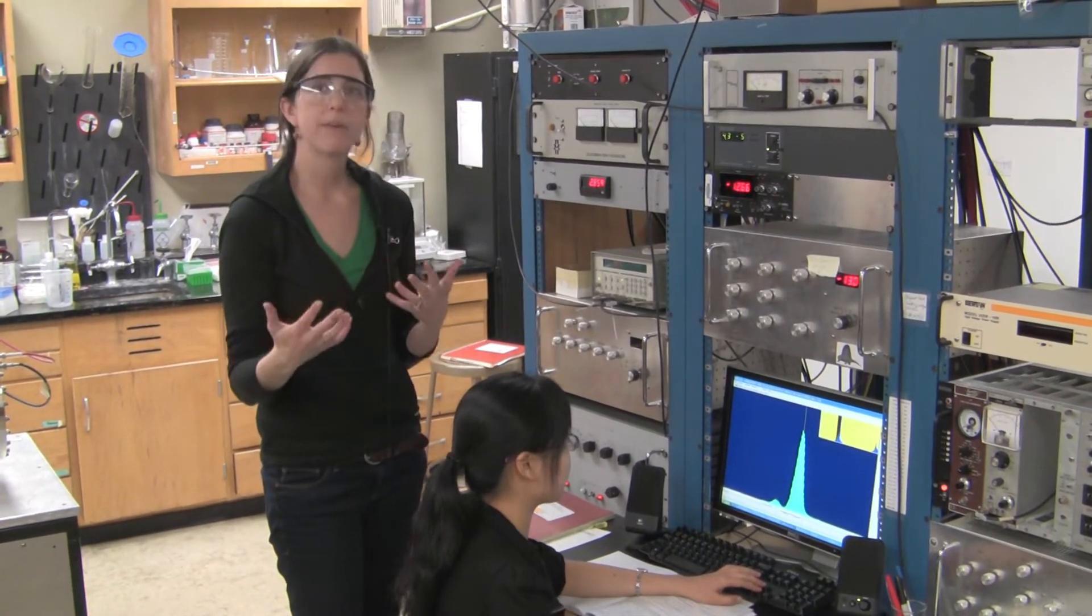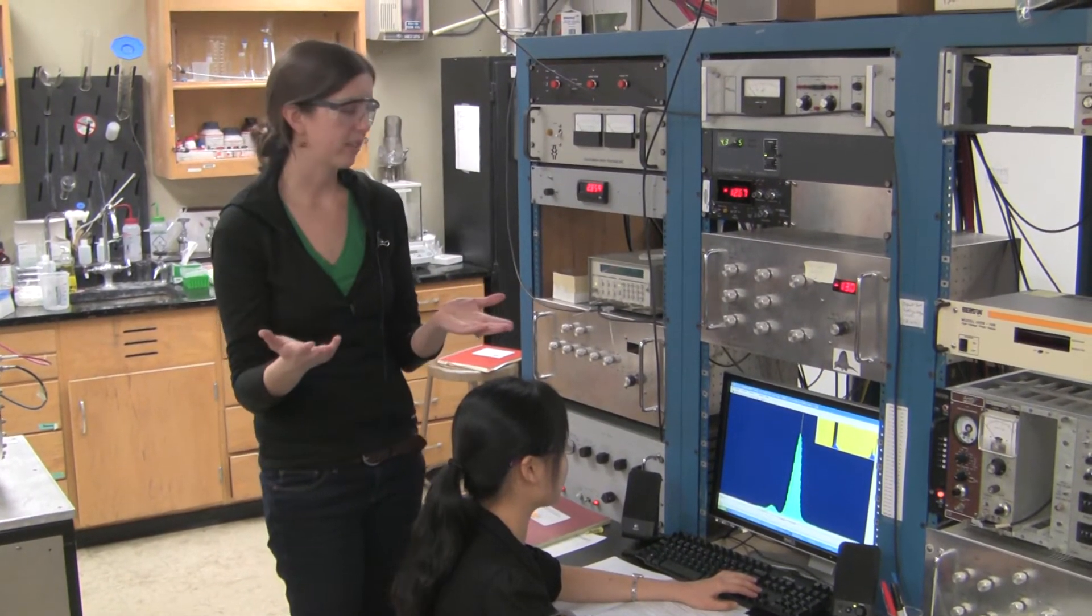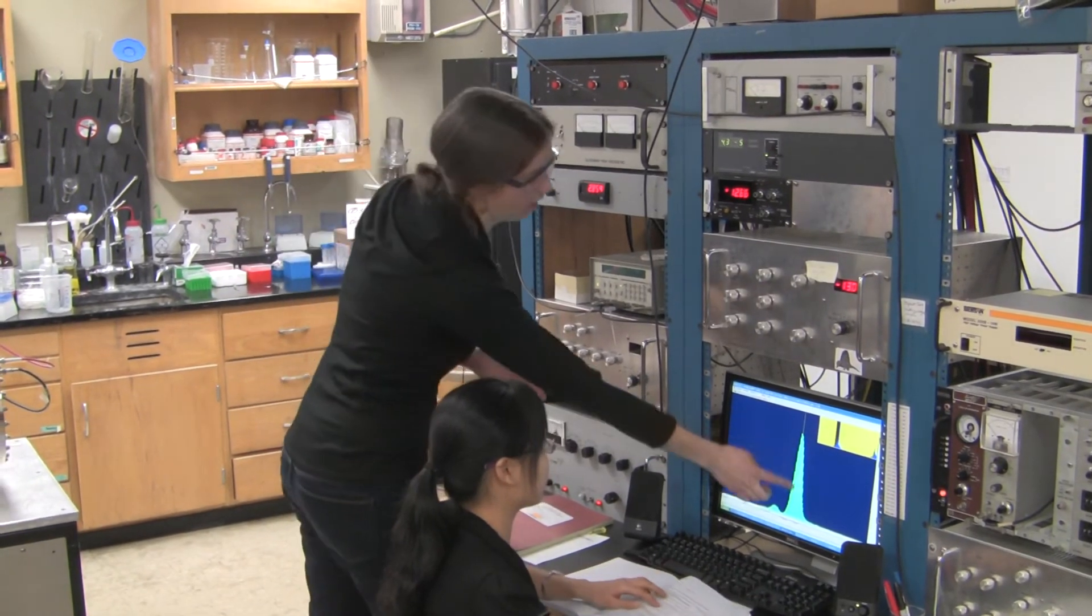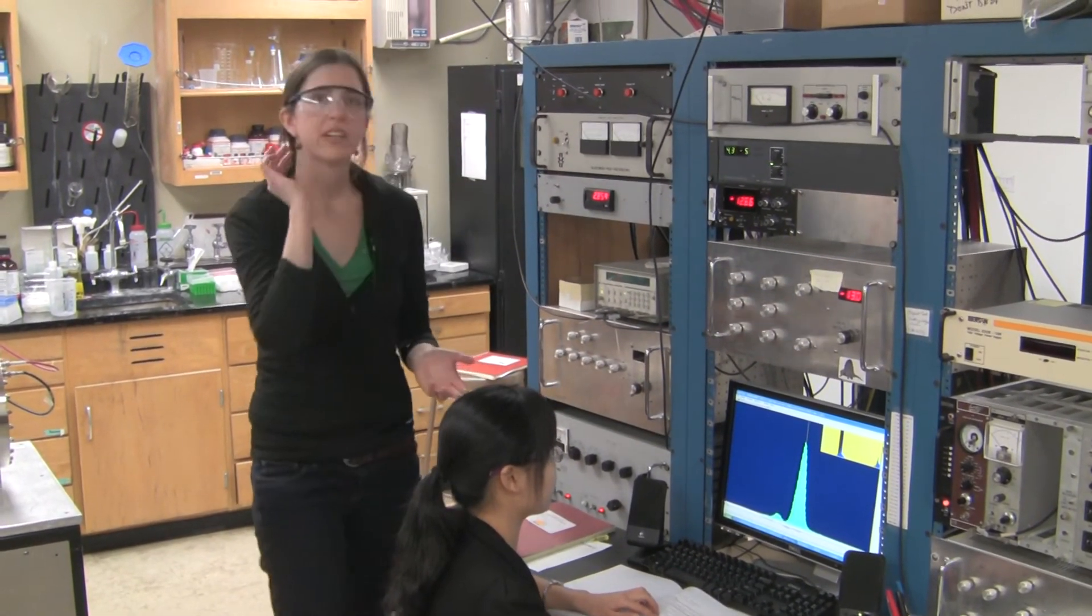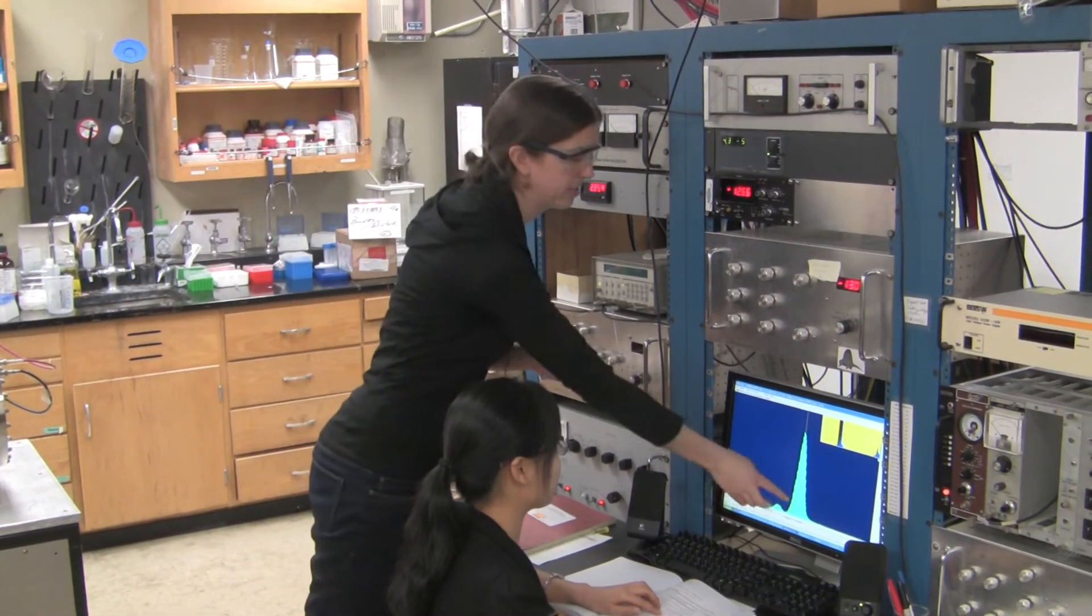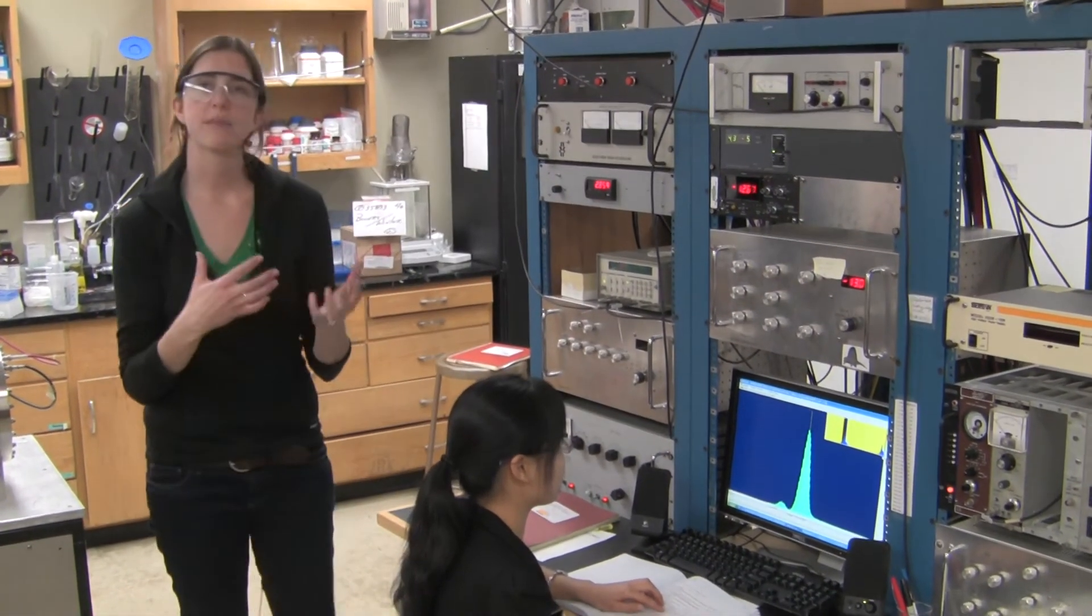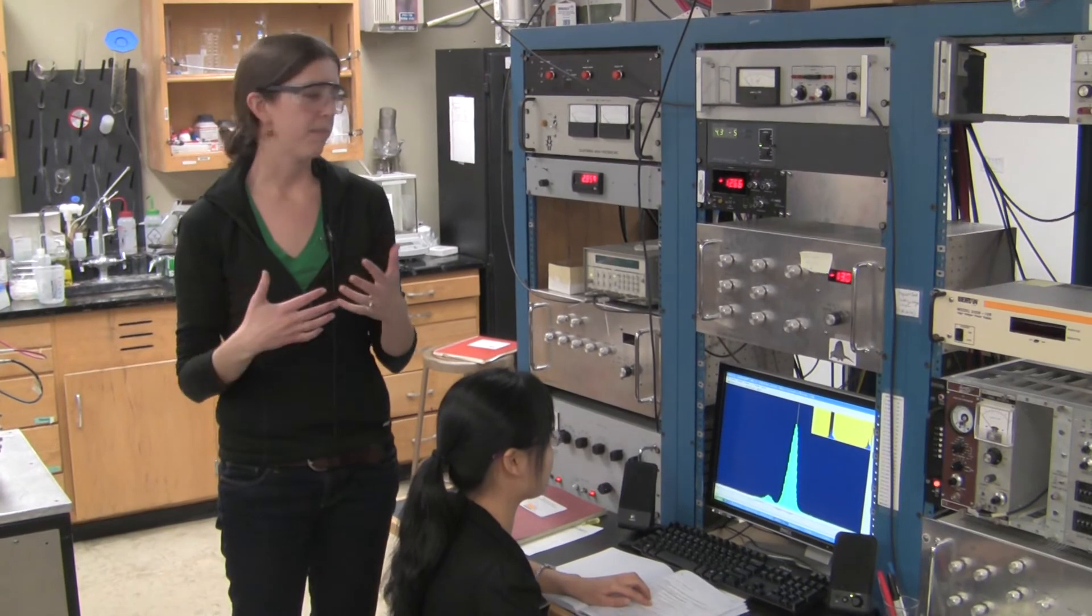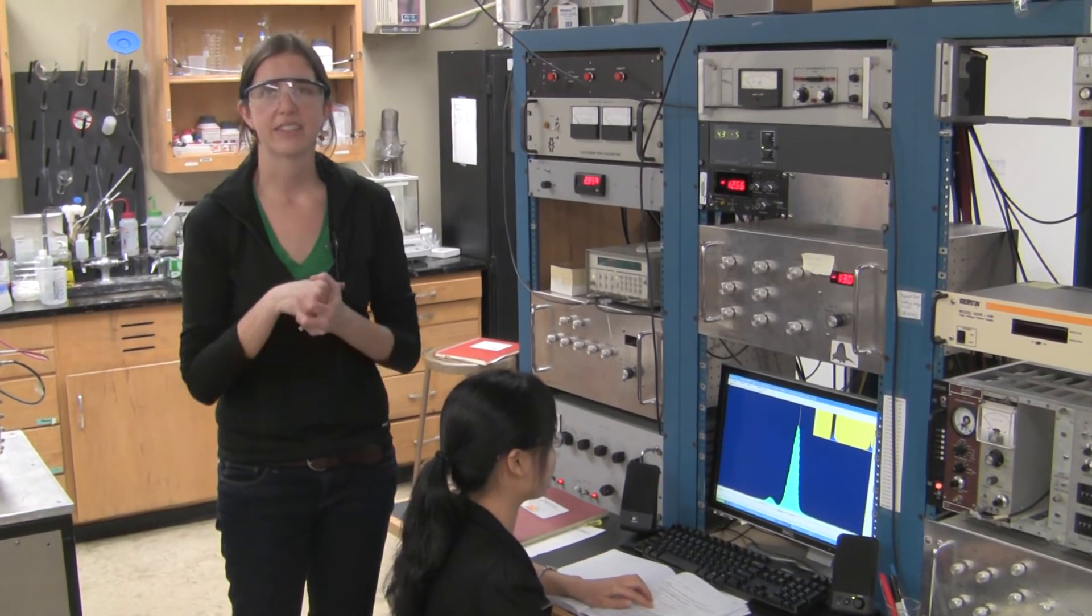But with ion mobility we can separate these aggregates by their size, and you can see we have one large population of smaller aggregates and a smaller population of large aggregates. And this really helps us identify what's going on in terms of the molecular mechanism of Alzheimer's disease.